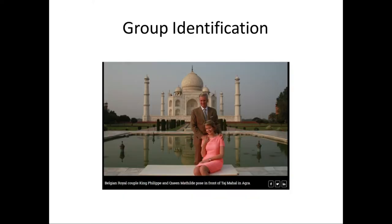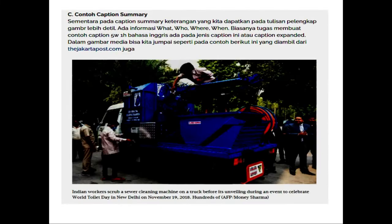Here is another example of group identification: 'Virgin Royal Copper King Philip and Queen Matilda pose in front of Taj Mahal in Agra.' Most of the examples use the Taj Mahal setting. If we make our own examples, we can use captions from locations around us — places nearby that we are familiar with.